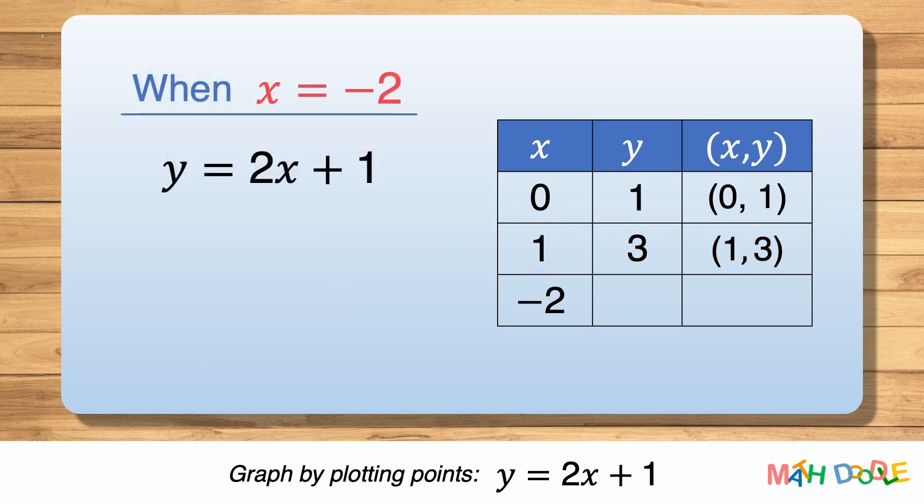Next, to find the value of y when x is minus 2, we substitute minus 2 for x. 2 times minus 2 is minus 4, and minus 4 plus 1 is minus 3. So when x is minus 2, y is minus 3. This tells us that the line passes through the point (-2, -3).